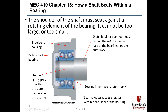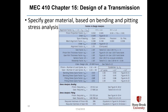The bearing outer race is press fit within a shoulder of the housing. If any part of the shaft shoulder touches the outer race, you're going to have a massive amount of friction and possibly have the shaft grind to a complete halt. Once you understand all the speeds and torques, you can do an analysis per chapters 9 and 10 to specify the gear material based on bending and pitting stress analysis. The goal is to figure out a required material hardness, where the required hardness for the pinion dominates the equations. Once you figure the hardness required for the pinion, you just use the same hardness for the mating gear.